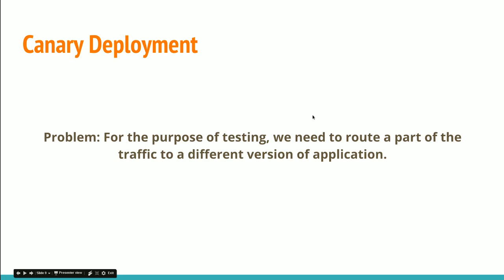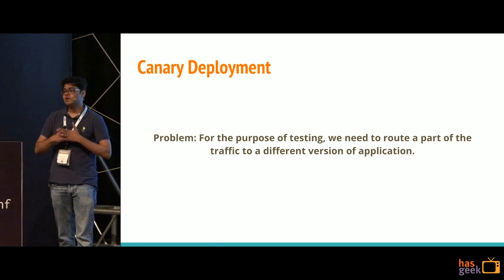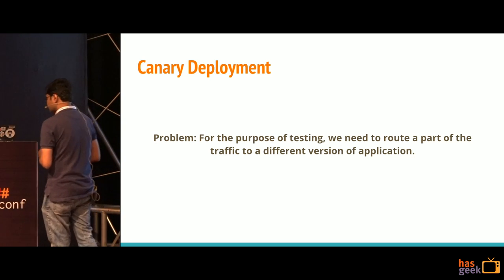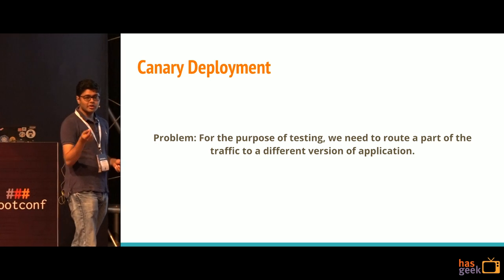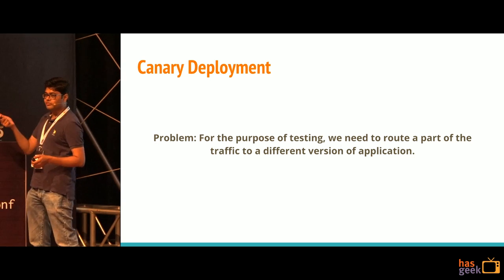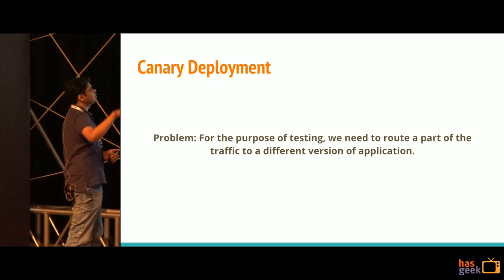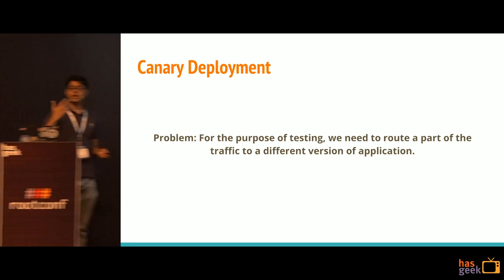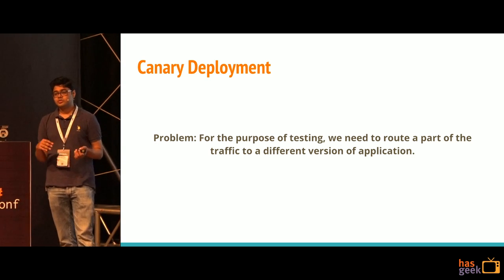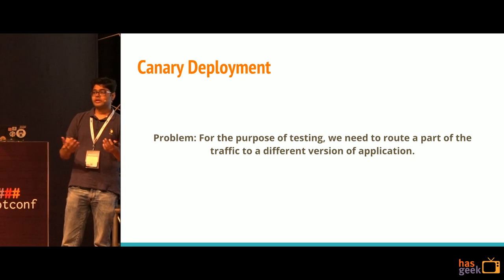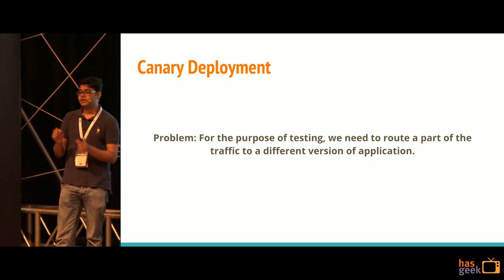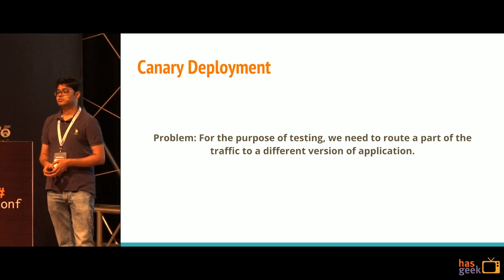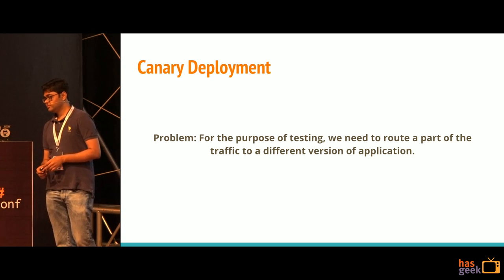Going back to the presentation — the most common thing you do when you want to upgrade an application is to test first. Before deployment, you always test. One of the most common ways to test is to do a canary deployment. Canary deployment means you route a very small portion of your production traffic to something you want to update to. Can anyone suggest a way to do that? We've discussed that there are ways to route traffic using labels — can anyone tell me a good way to route only a portion of traffic to a different container?